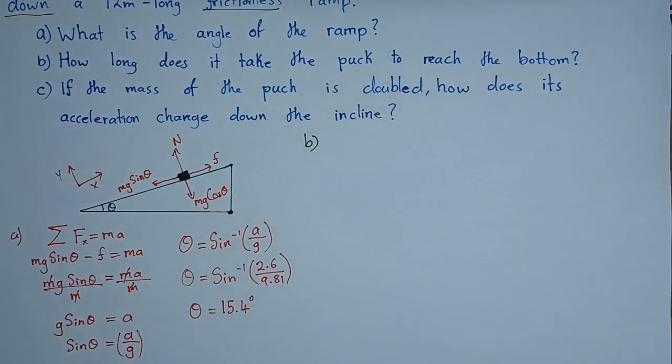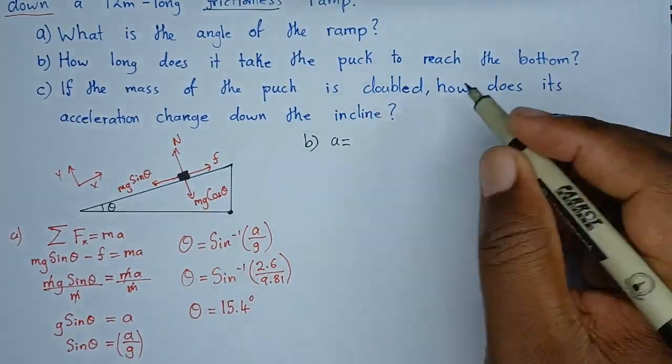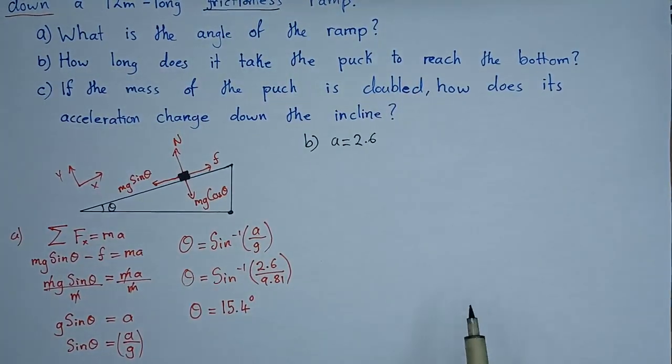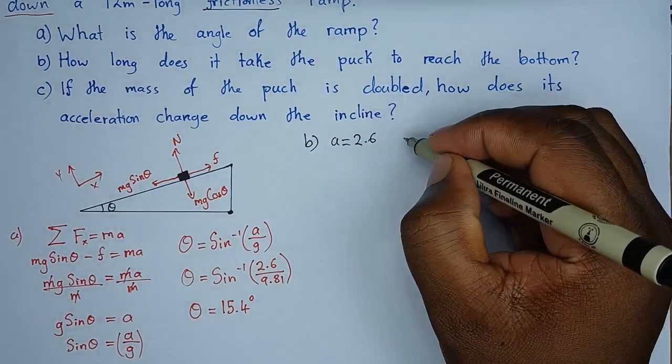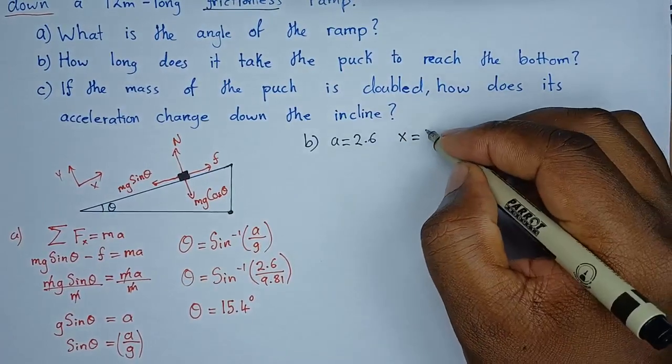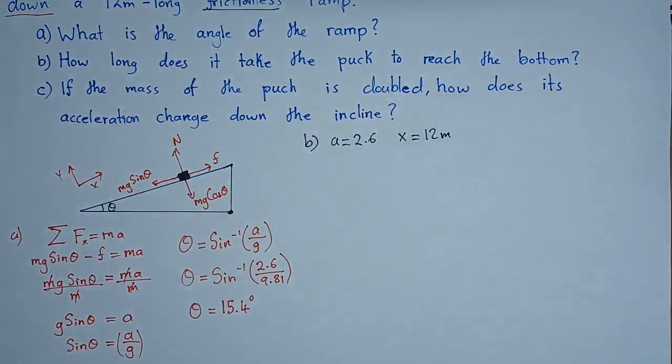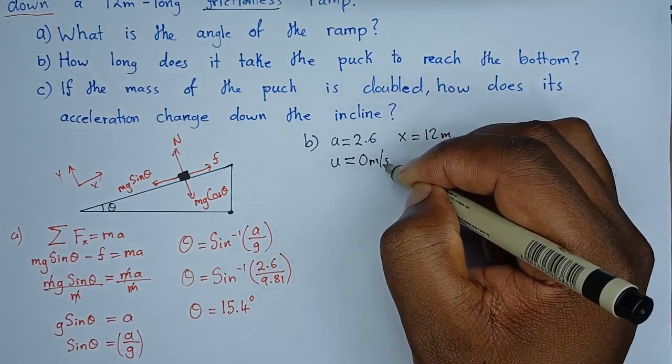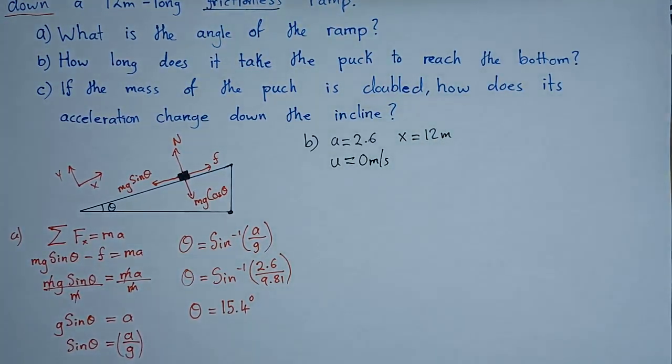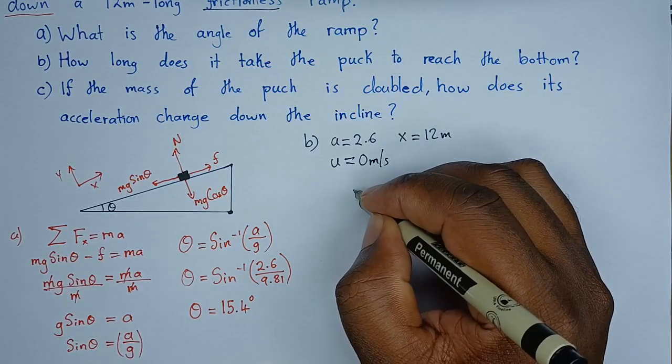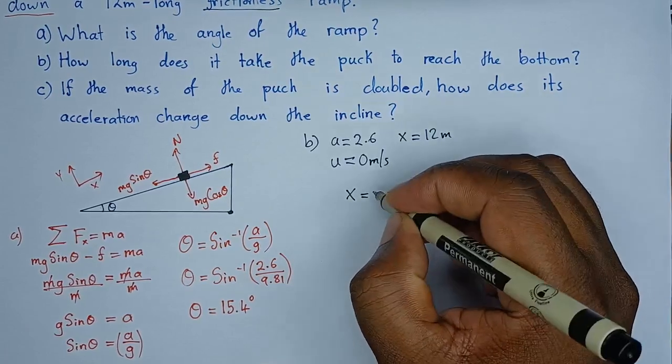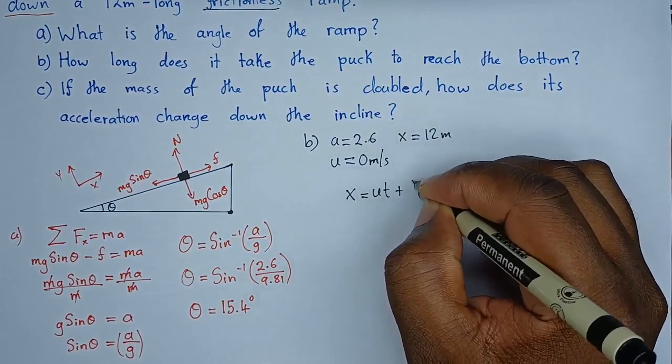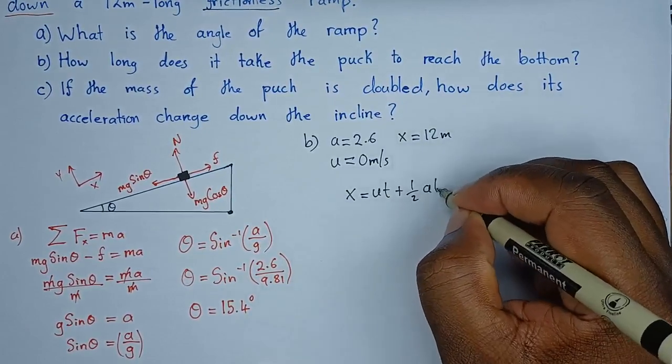what we have in the question is acceleration. Our acceleration is 2.6. The other thing that we have is the displacement. So, x, the displacement is 12 meters. Then, since it was sliding down, we're going to assume that the initial velocity is 0 meters per second. Then, with this information, we can easily find the time.